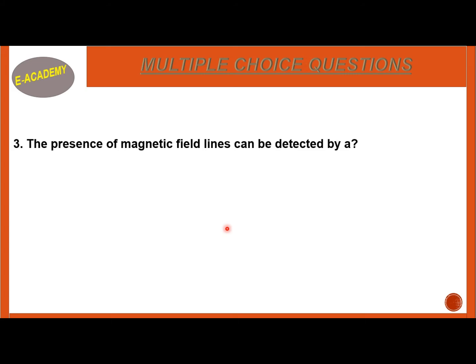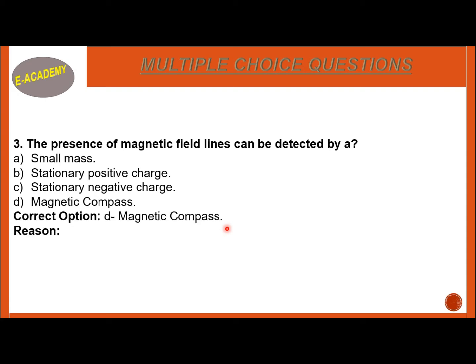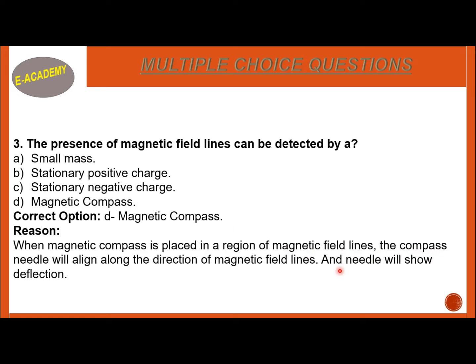Question 3: The presence of magnetic field lines can be detected by a stationary positive charge, a stationary negative charge, or a magnetic compass. The correct answer involves the magnetic compass.